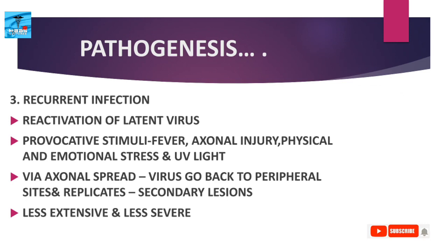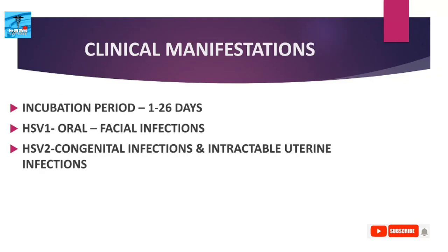In recurrent infection, reactivation of the latent virus can occur following various provocative stimuli such as fever, axonal injury, physical and emotional stress, and exposure to UV light. Via axonal spread, the virus travels back to the peripheral site and further replicates in the skin and mucosa, producing secondary lesions. Recurrent infections are less extensive and less severe.